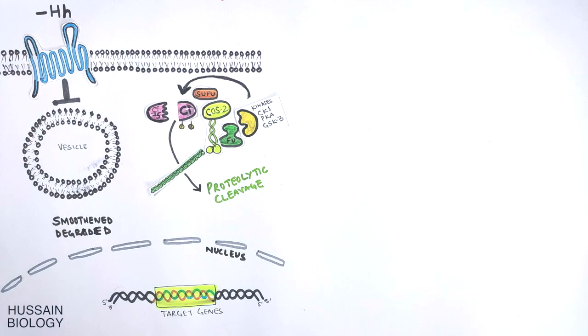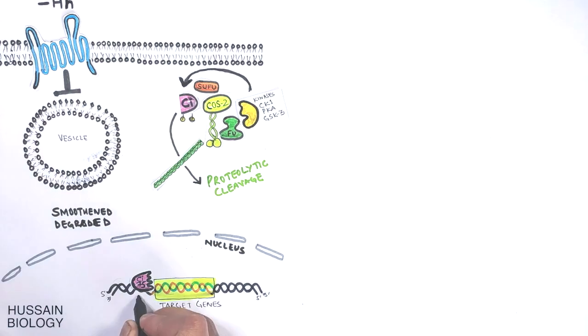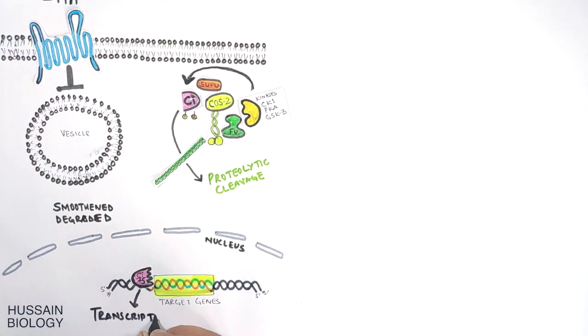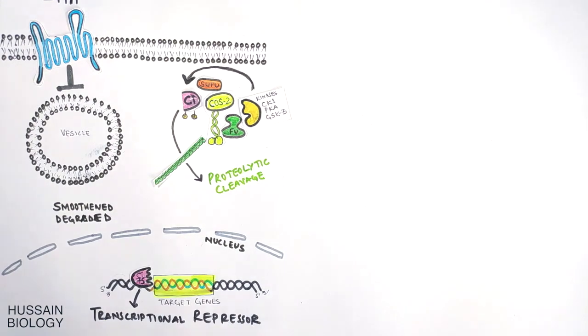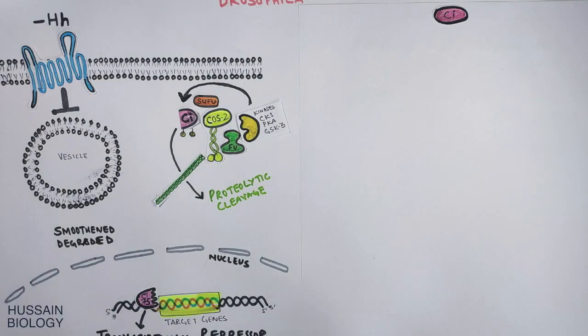From this cleavage we get the Ci 75 protein, and this Ci 75 protein is also called the Ci R or Ci repressor, which then gets into the nucleus where it targets the DNA and acts as a transcriptional repressor for hedgehog signaling genes.